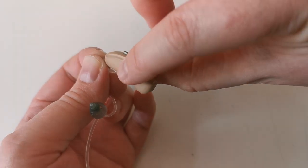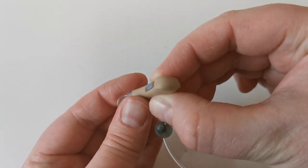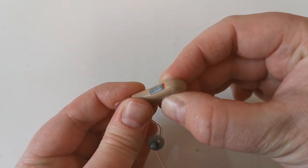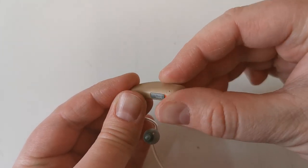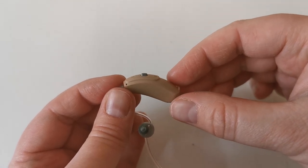There are left and right markers at the bottom of the hearing aid. The right-sided hearing aid has a red marker, whereas the left-sided hearing aid has a blue marker in the same location.